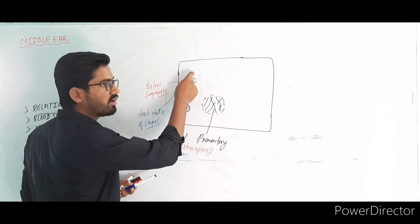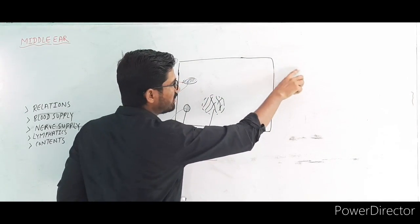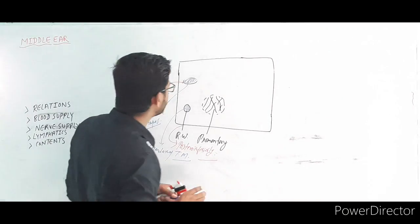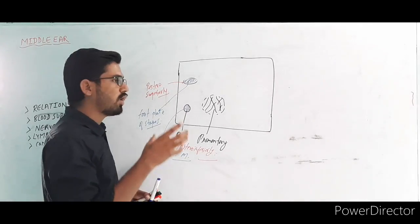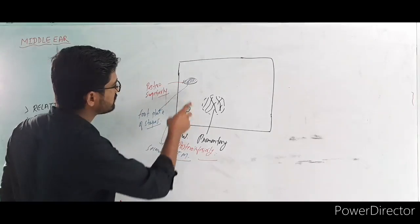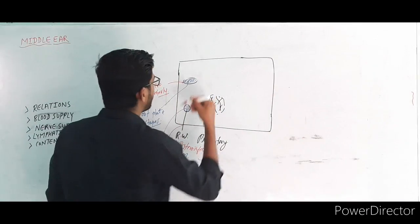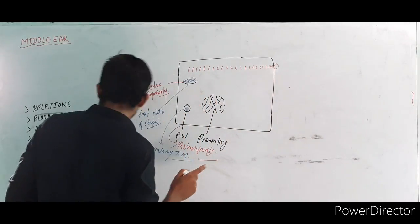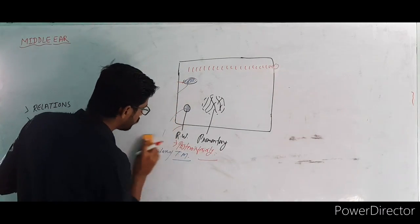Sound comes first to the oval window, not the round window. The oval window generates the impulse which travels through the cochlea. When pressure builds from the oval window, the round window acts as a pressure release. The oval window is also called the vestibular window, and the round window is also called the cochlear window or fenestra rotundum. The fourth feature of the medial wall is the bony canal for the facial nerve.